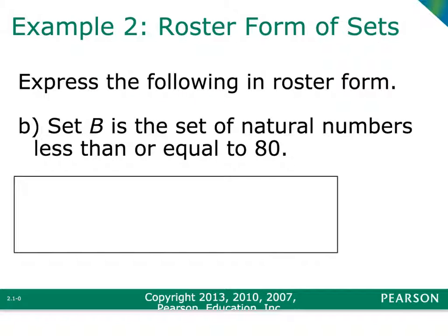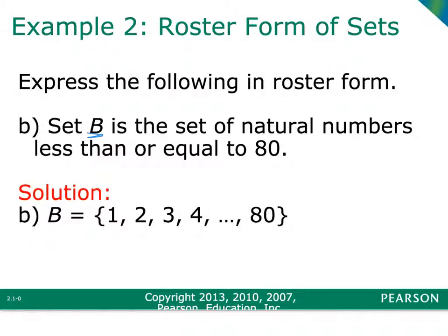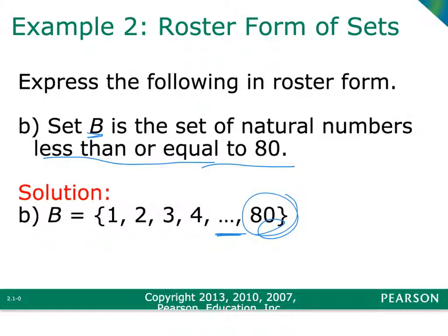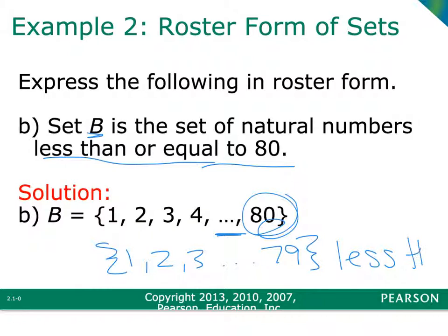Another example: set B is the set of natural numbers less than or equal to 80. I don't expect you to write down 80 numbers, so you are fine to use the ellipsis — dot dot dot — to skip numbers. You do need to know natural numbers start at 1 and count up, and because they said less than or equal to 80, you would include 80 in your set. If they just said less than 80, you would go up to 79 and not include it.